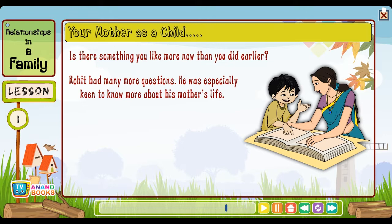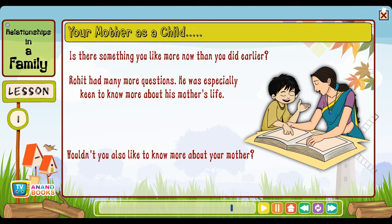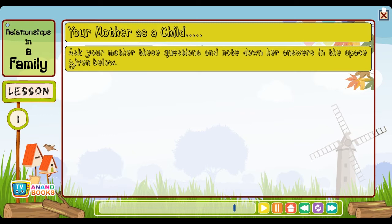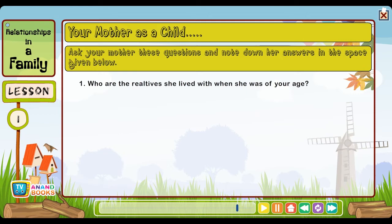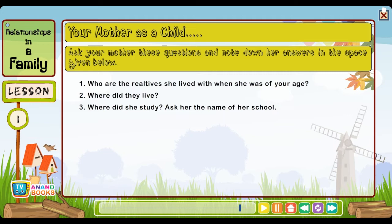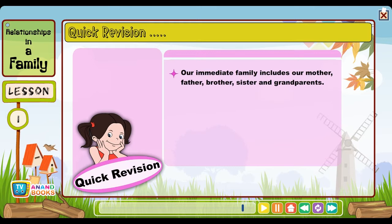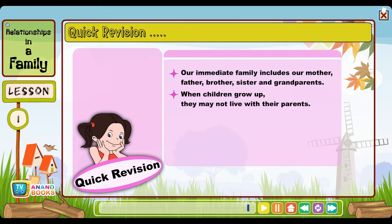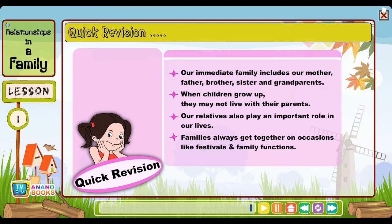Rohit had many more questions. He was especially keen to know more about his mother's life. Ask your mother these questions and note down her answers: Who were the relatives she lived with when she was your age? Where did they live? Where did she study? Quick revision: Our immediate family includes a mother, father, brother, sister and grandparents. When children grow up they may not live with their parents. Our relatives also play an important role in our lives. Families always get together on occasions like festivals and family functions.